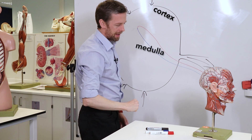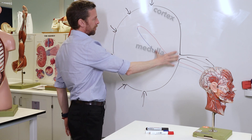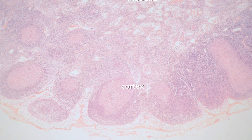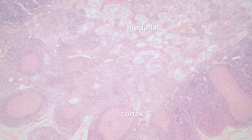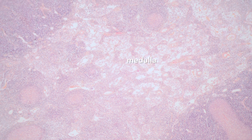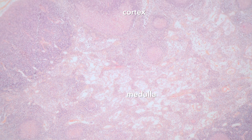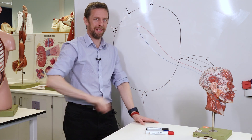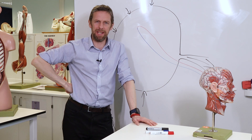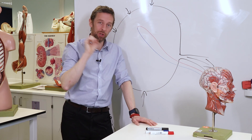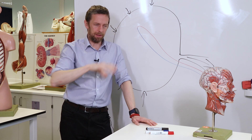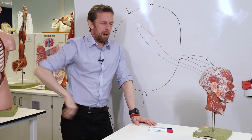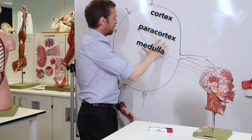There is a cortex around the outside and a medulla centrally. The cortex is particularly packed with cells - lymphocytes. We've got B lymphocytes and T lymphocytes in the cortex. The B lymphocytes get pulled out into the outer part of the cortex, which is cytokine-mediated - there are chemical cues that attract them and make them stay in certain places.